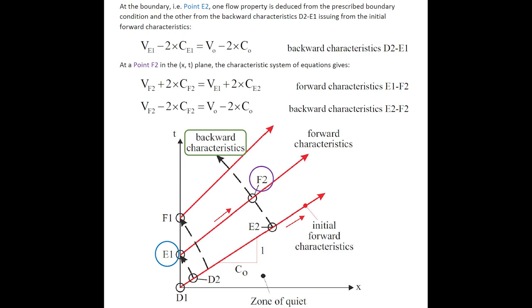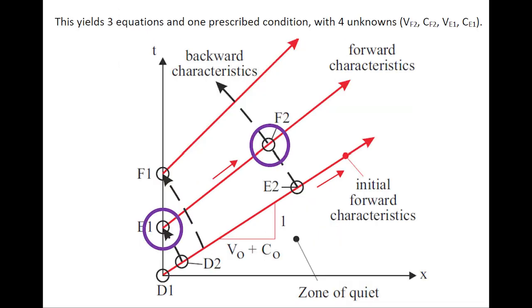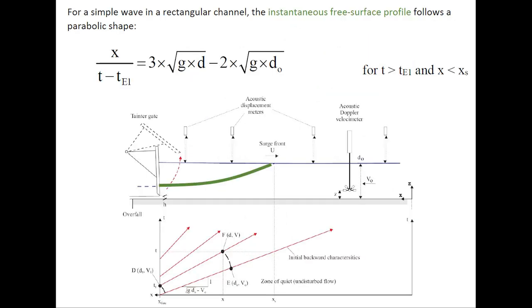At the point f2 in the xt plane, the characteristic system of equations give two equations. This yields three equations and one prescribed condition, with four unknowns. For a simple wave in a rectangular channel, the instantaneous free surface profile follows a parabolic shape, illustrated here on the sketch below.